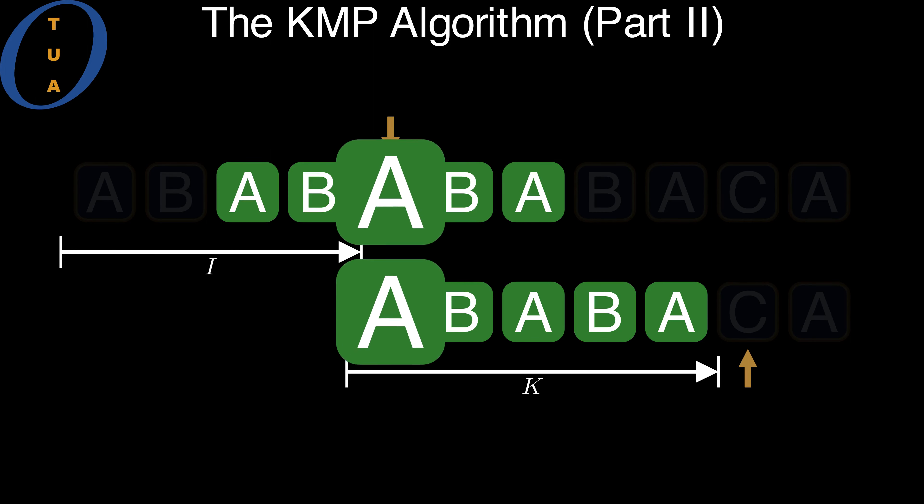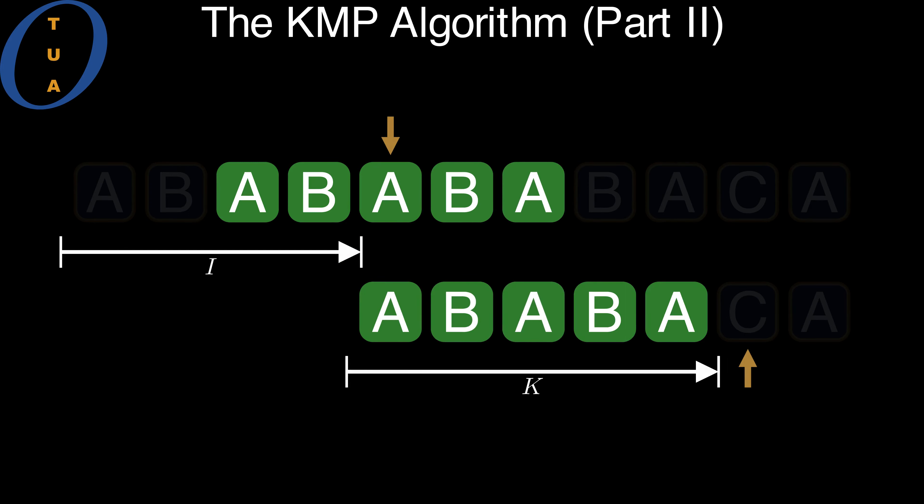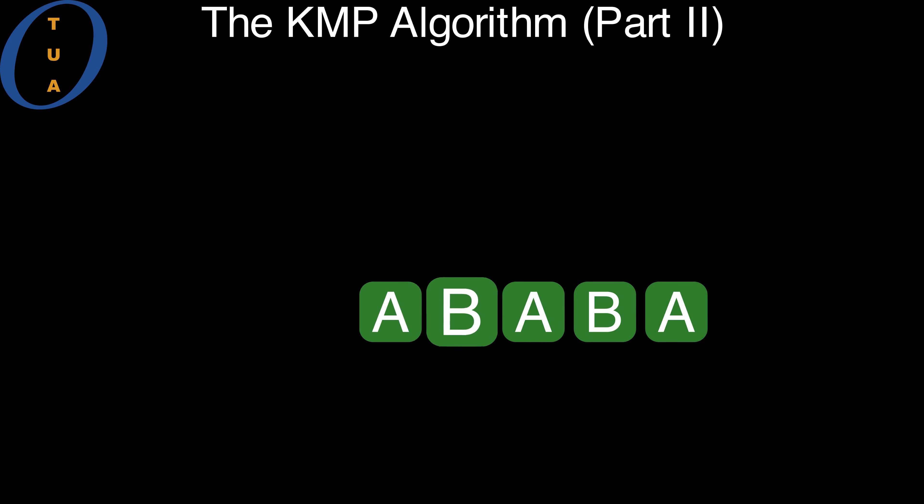At this offset, all pairs of known symbols that are aligned do in fact match. These symbols form a suffix of the overlap in the text, and also a prefix of the overlap in the pattern.